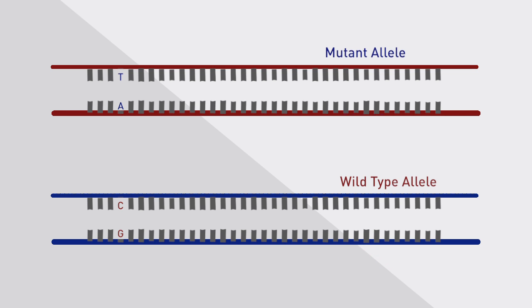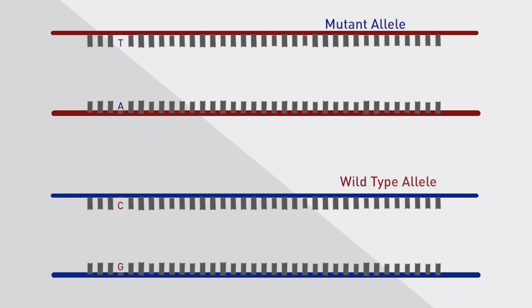A mutant allele assay based on CAST-PCR technology contains four components. The allele-specific, or AS, primer is designed to be specific for a mutant allele in a target gene.